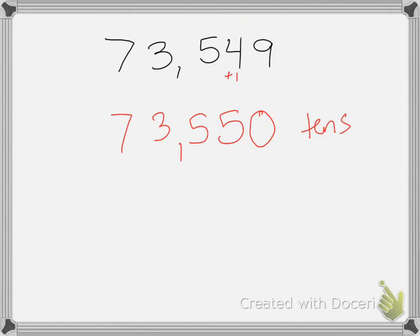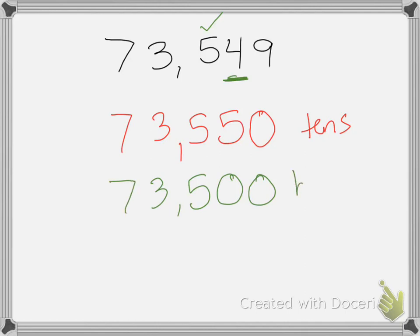What if I rounded it to the hundreds place? We put a check above the hundreds and look to the right — the digit is four. Is four five or more? No, it's not. So the five is going to stay the same in the hundreds place. The tens and ones will become zeros, and everything else stays the same. Rounding to the hundreds place, my answer would be 73,500.